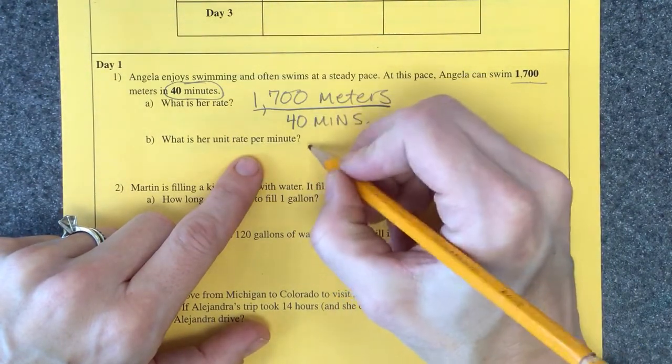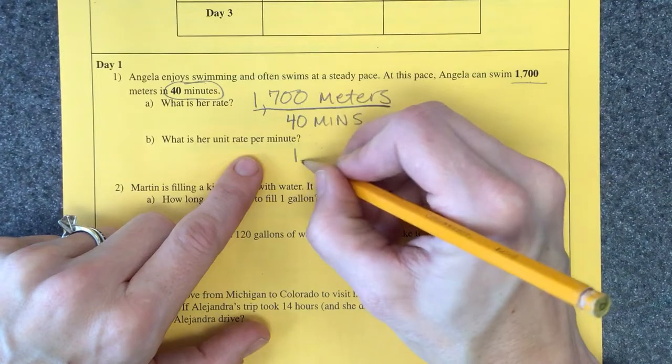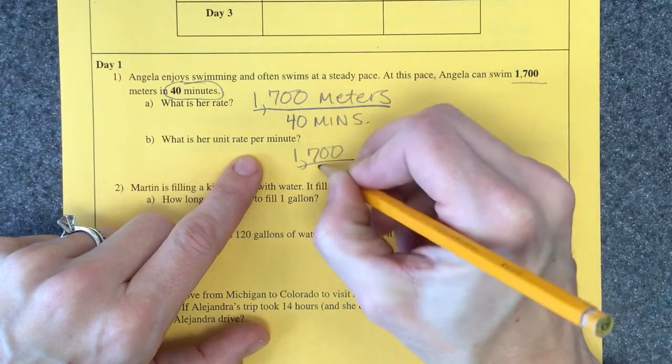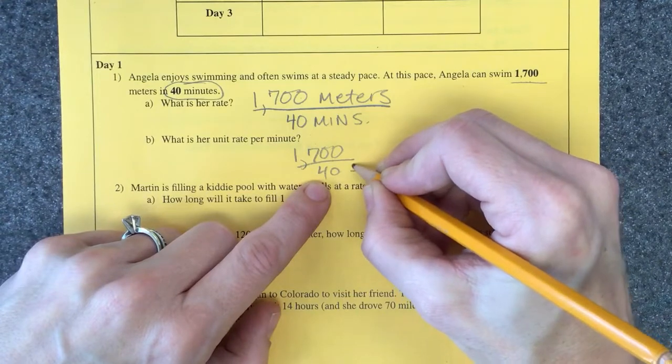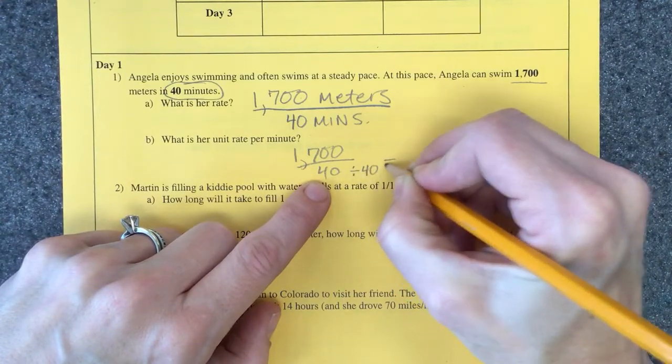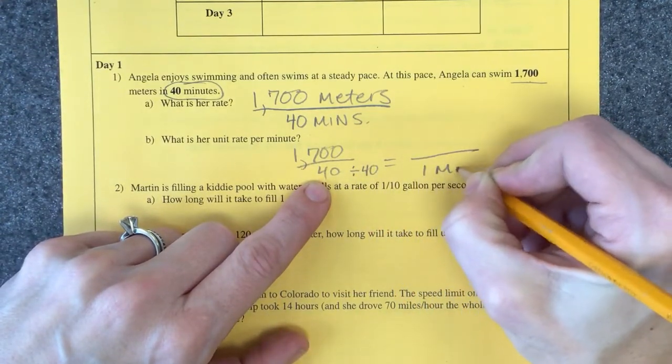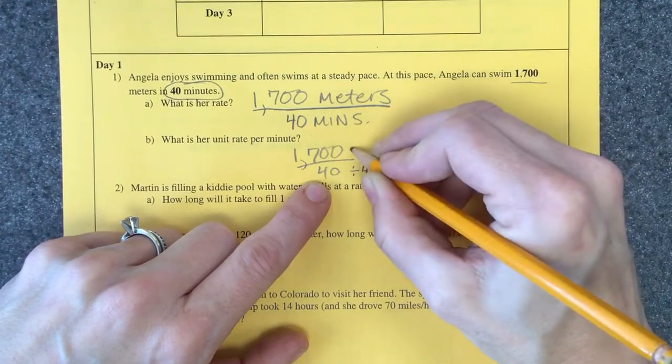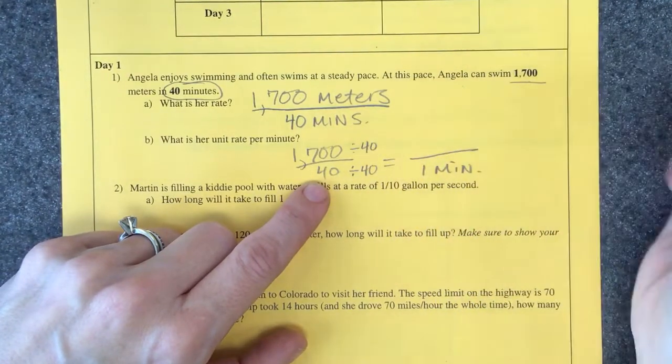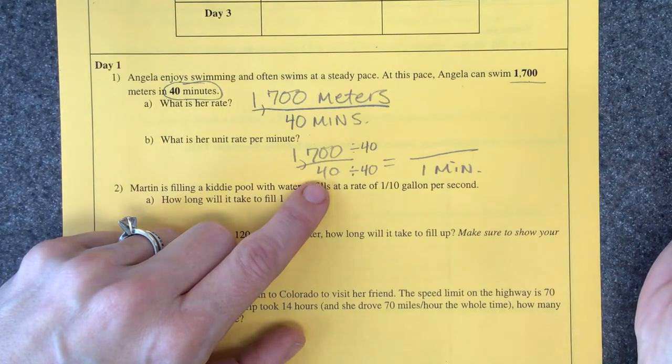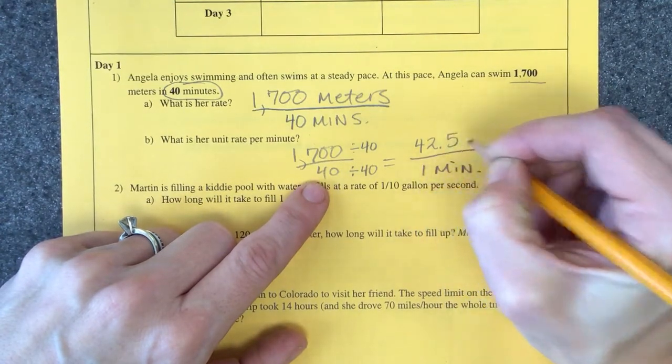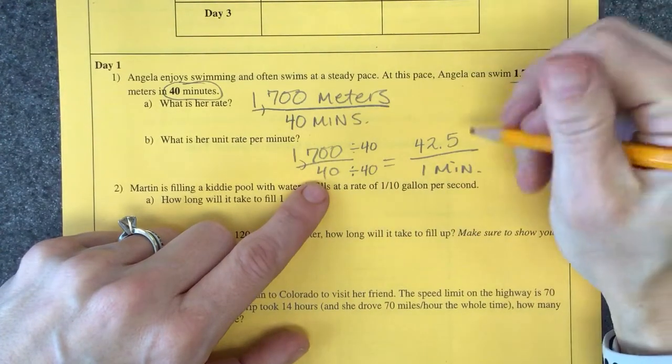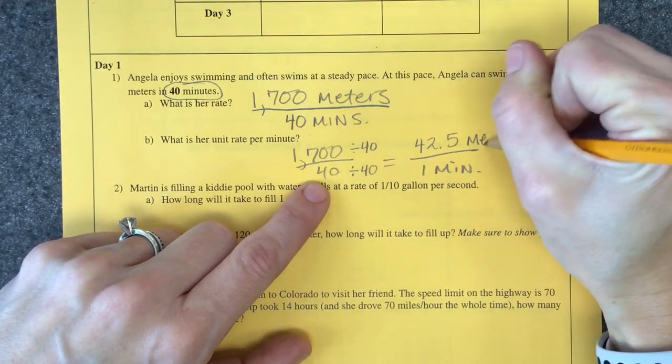All right, what is her unit rate? Yes, her unit rate is 42.5. So if you divide 40 by 40 to get it to one minute, go straight across and divide 1700 by 40, you get 42.5. This is a world-class TV channel. 42.5 meters per minute. Great job, thank you for double checking that.